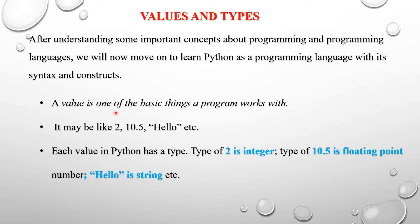A value is one of the basic things a program works with — it may be like 2, 10.5, 'hello', etc. Each value in Python has a type. The type of 2 is integer, the type of 10.5 is floating point number, and 'hello' is the string. So 2 is the integer, 10.5 is the floating point, and 'hello' is the string.